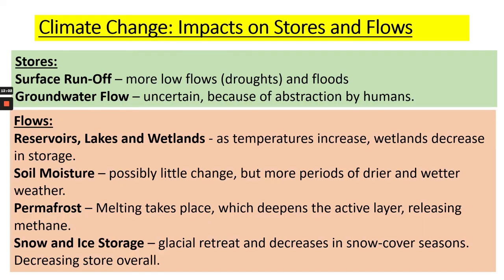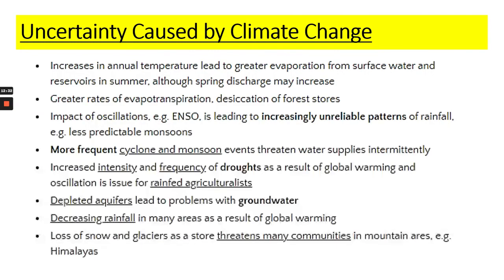Permafrost in the Arctic regions will melt, deepening the active layer of the soil, which will release methane and carbon dioxide into the atmosphere and cause further climate change. Snow and ice storage will also be affected — it's very highly likely we'll see glacial retreat continuing, less snow cover in winter seasons, and that decreases our overall water storage as a result of climate change. The key message is that climate change causes increased uncertainty for the hydrological cycle.